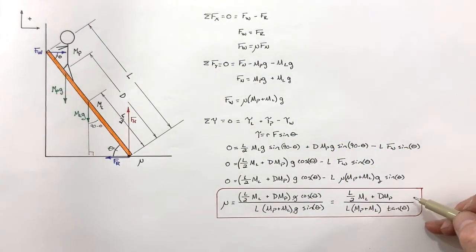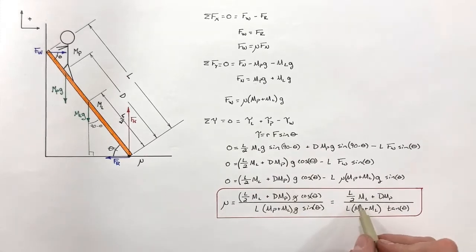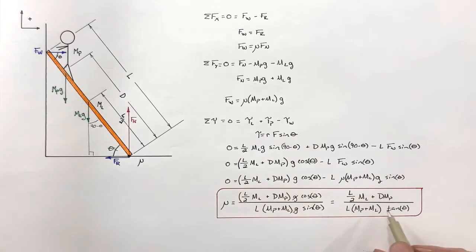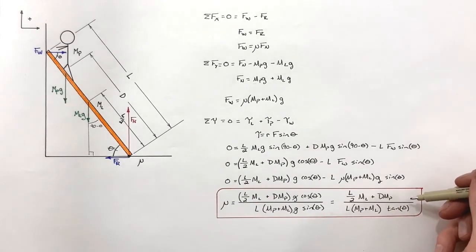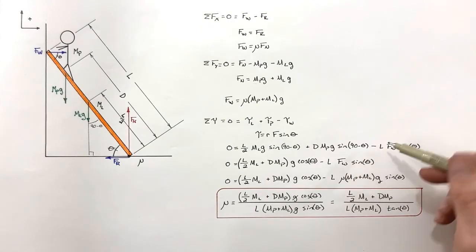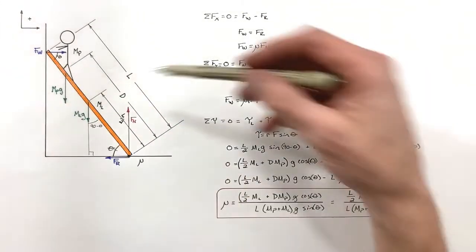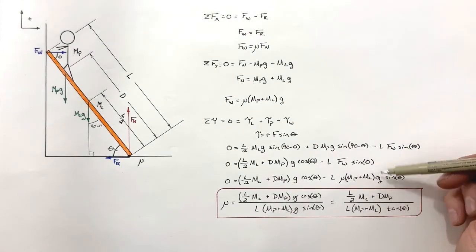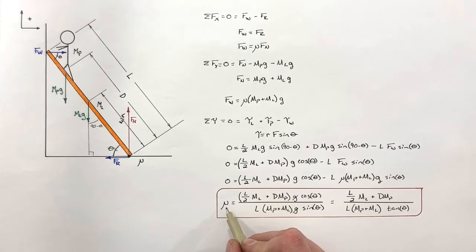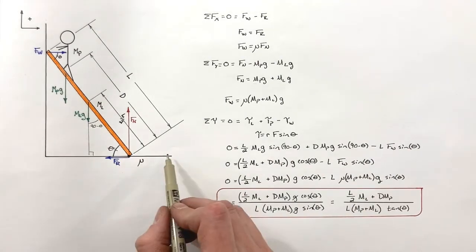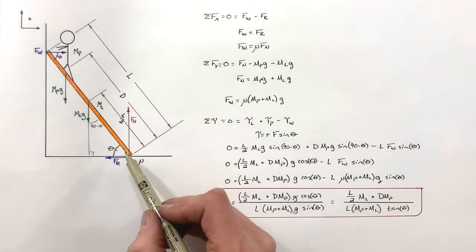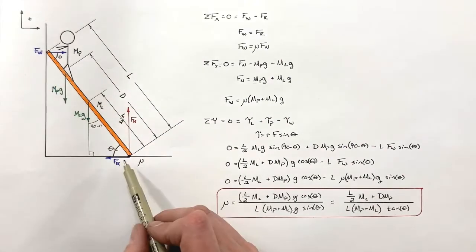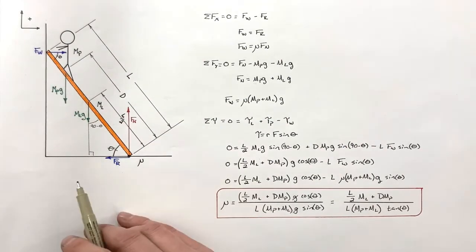After canceling the g's and combining the cosine and sine terms, we arrive at a final equation for mu in terms of all the other variables. This relates mu to everything at play in the problem. As the person walks farther up the ladder, d increases — and because d increases, the required coefficient of friction between the ladder and the ground goes up. So the farther up the ladder you go, the closer it is to sliding out from underneath you.